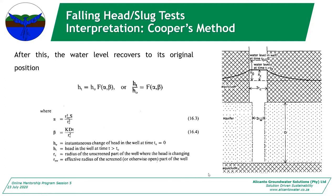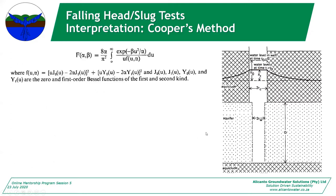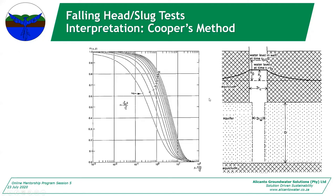At the end of the day, the Cooper method is a curve fitting exercise on a semi-log graph — log alpha on the x-axis against your normalized head. You will fit your field data curve to the type curves shown. The solution assumes the aquifer is confined, homogeneous, of infinite areal extent and uniform thickness, and the pre-testing piezometric surface is near horizontal.